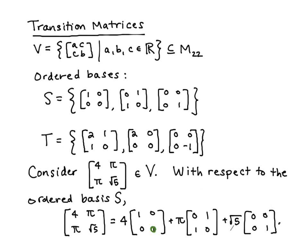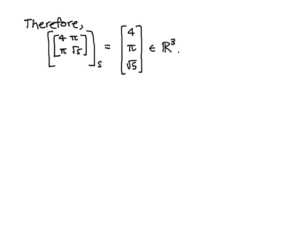Okay, so we've got the linear combination of our matrix 4, pi, pi, square root of 5 in terms of the ordered basis S, where I've written the basis elements in order. And I look at the coefficients in this linear combination, and those become my coordinate vector. So when I give this matrix coordinates with respect to S, I get a 3 by 1 vector, and it's 4, pi, square root of 5 in R3.